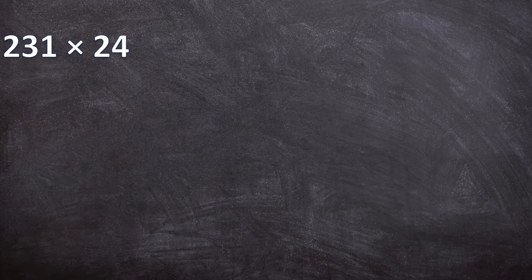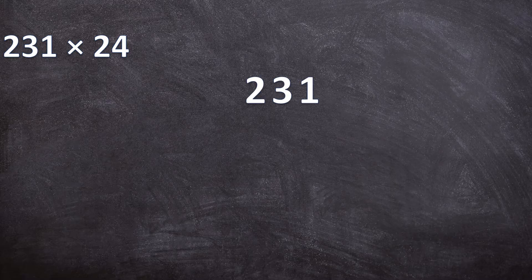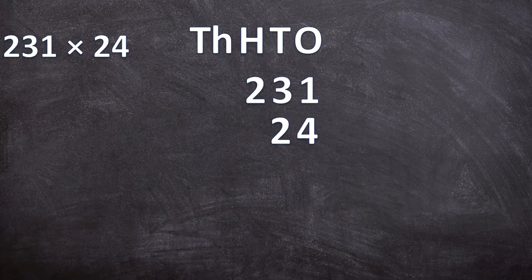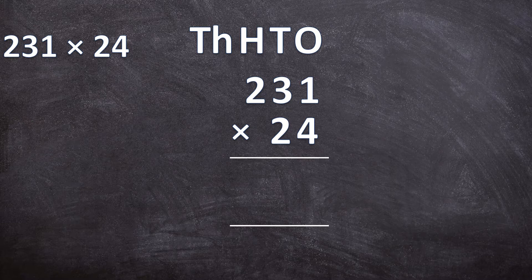Before we can start multiplying, we need to write this in the correct format — we need to write them underneath each other. So first we have 231, and then underneath we have 24. Always remember to write it neatly: your ones should be underneath each other, and also your tens. Once they are neatly underneath each other, you can write your multiplication sign and your two lines. Make sure your lines are two spaces apart.